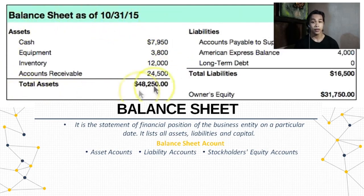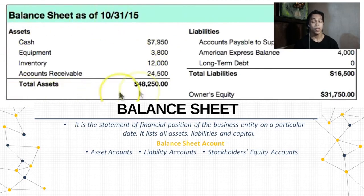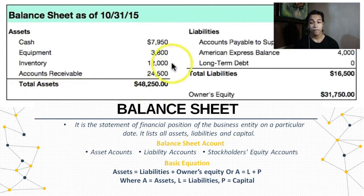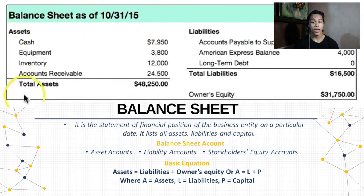Examples of asset accounts are cash, accounts receivable, supplies, and equipment. Examples of liability accounts are notes payable, accounts payable, and wages payable. Examples of stockholders' equity accounts are common stock and retained earnings. The whole of financial accounting depends on the accounting equation, also known as the balance sheet equation. The basic equation is: Assets = Liabilities + Owner's Equity, or A = L + P, where A equals assets, L equals liabilities, and P equals capital.